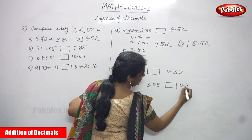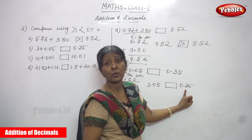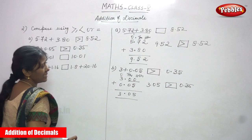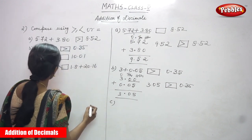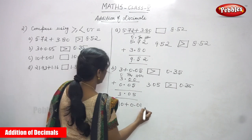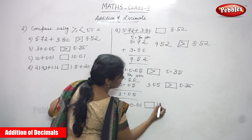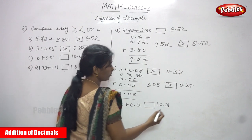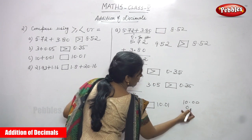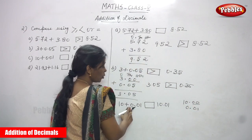The answer is 3.05. Now compare with 0.35. Which is greater? 3.05 is greater than 0.35, so put a greater sign in that box. Third question C: 10 plus 0.01, with a box, then 10.01.